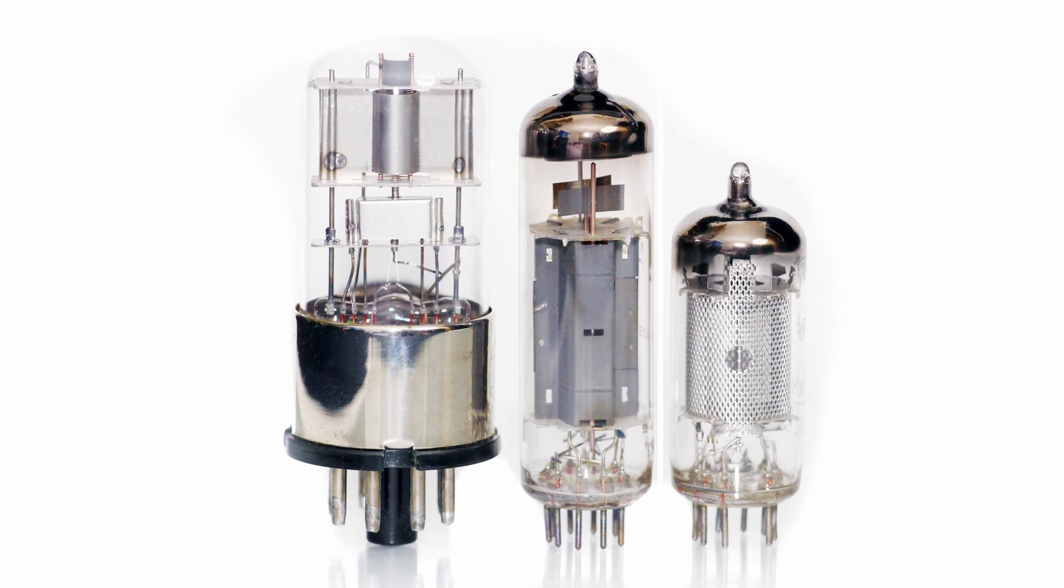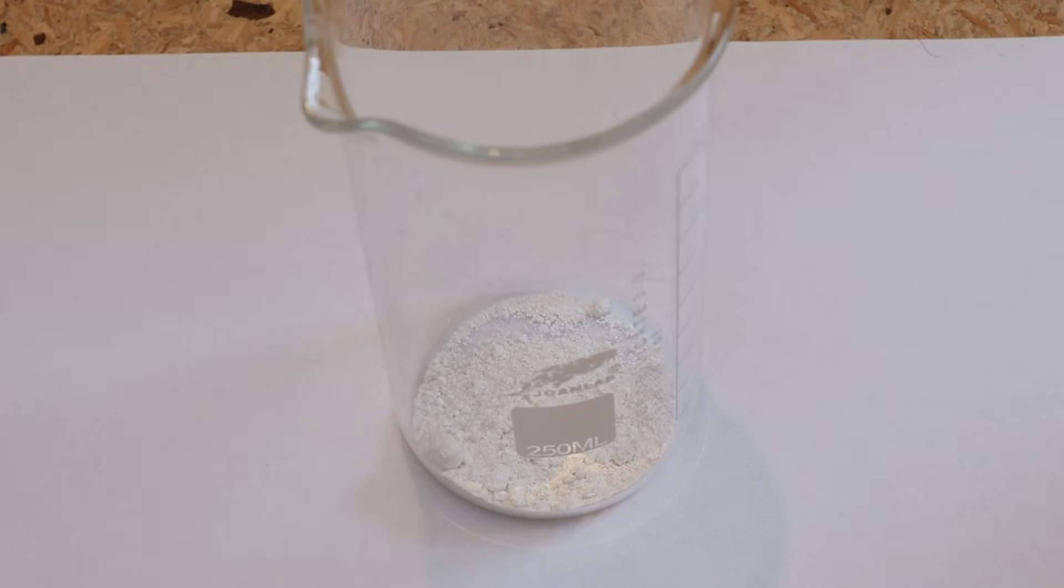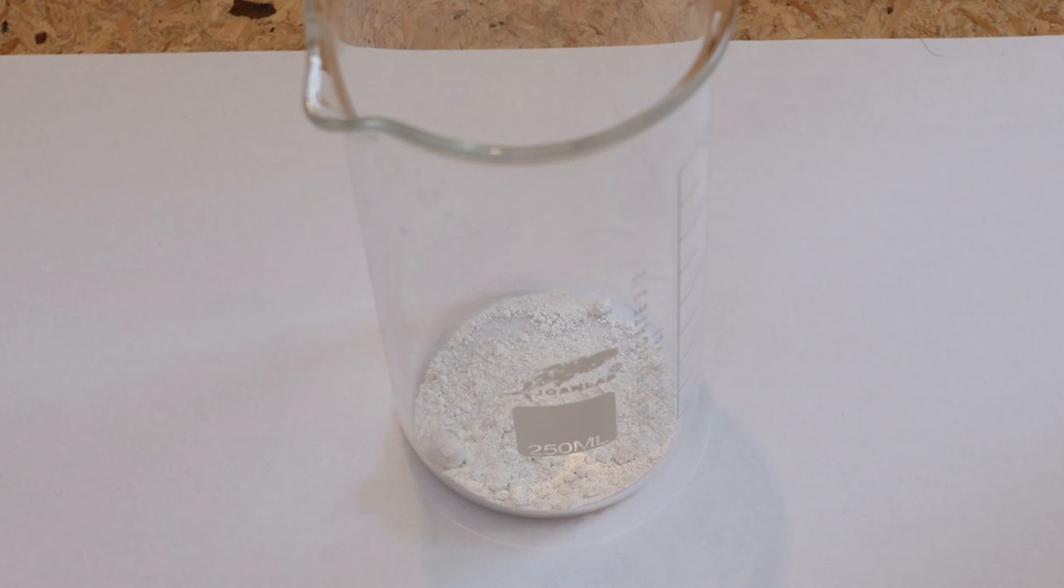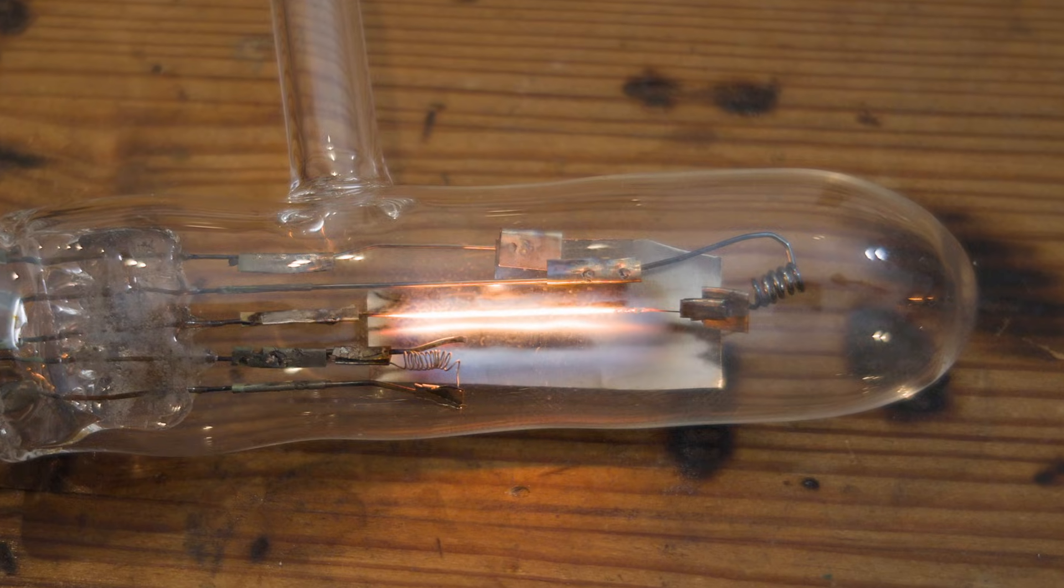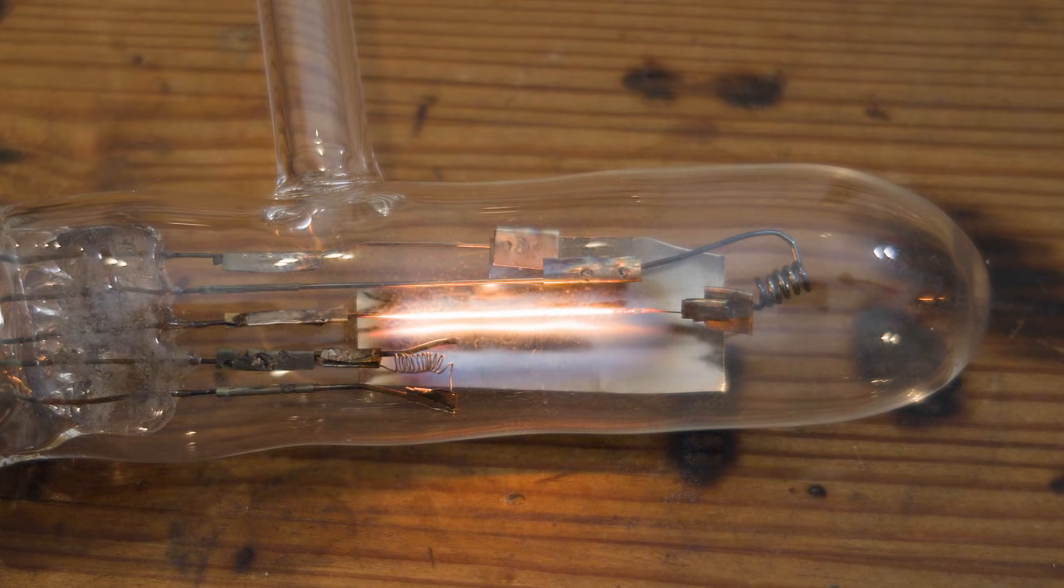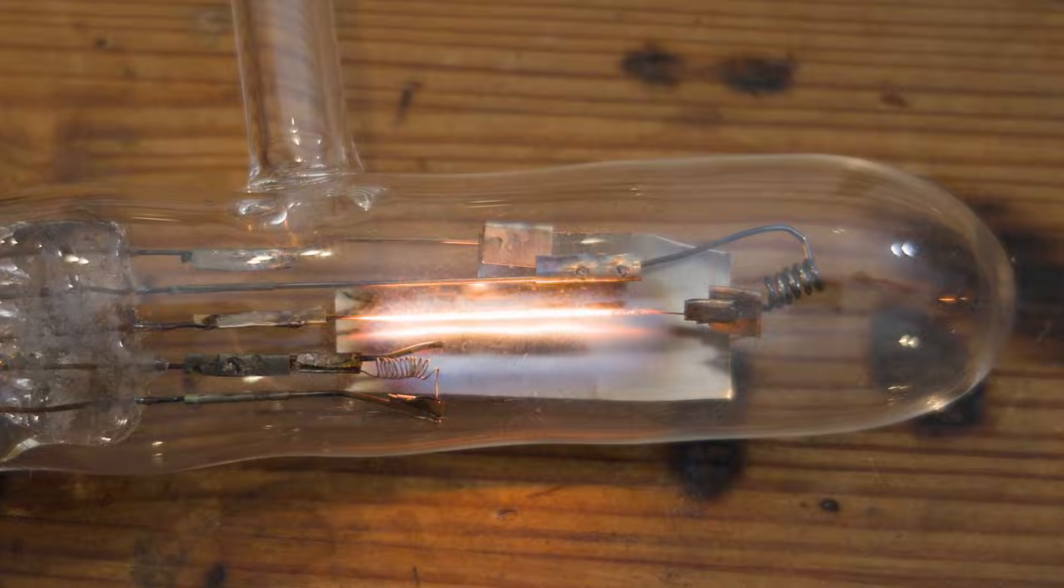So in normal vacuum tubes what people did is they took the carbonates from these elements that I talked about earlier. And put it onto the filament. And in the vacuum these carbonates break down into the elements. Or at least partially break down into the elements. And this results in a better emission.